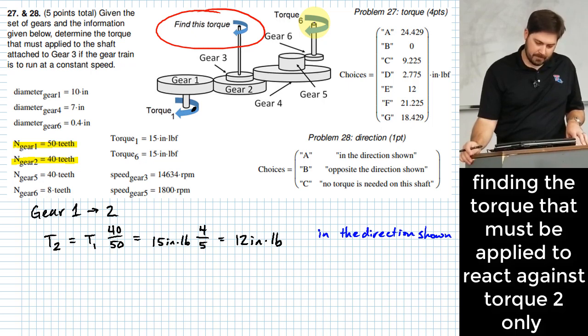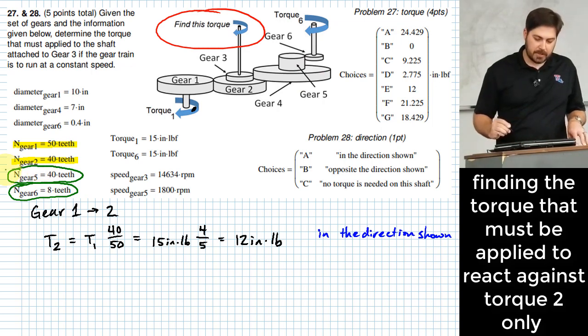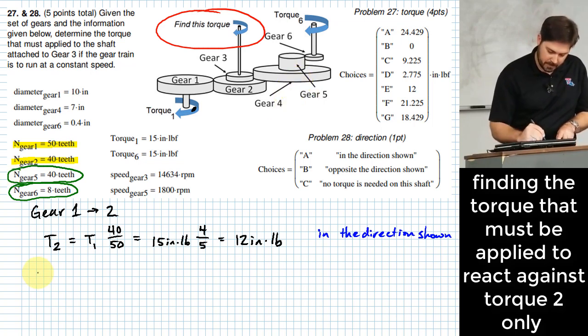Okay. How do we figure that out? Okay. So I know the number of teeth on six, right? Number of teeth on six is given right here. And I know the number of teeth on five that's given right here. So I should be in good shape to figure out how much torque is transmitted into this kind of first stage right here. Okay. So I'll just do that right here. Gear six to five.